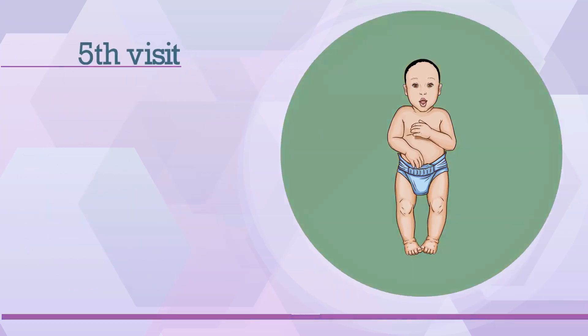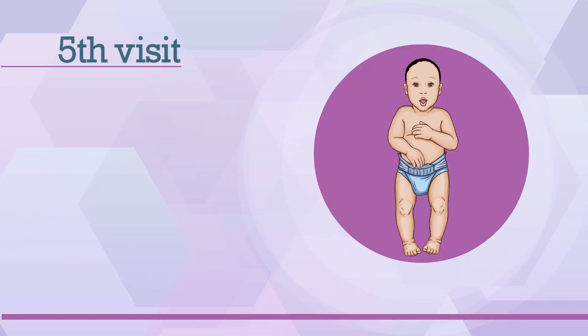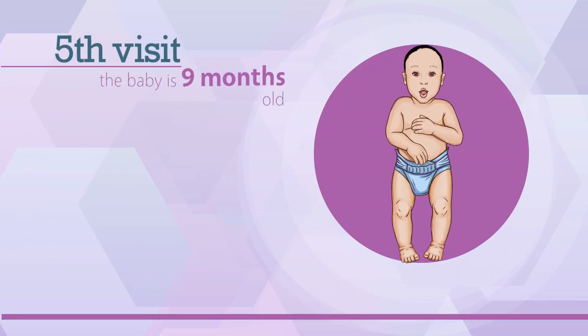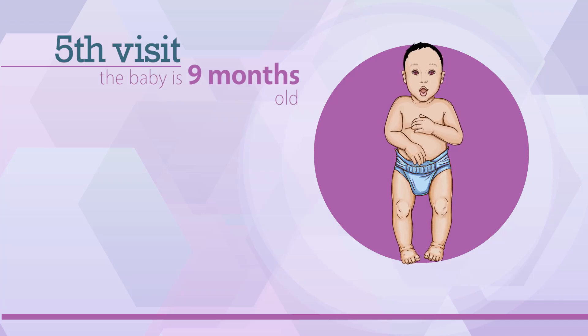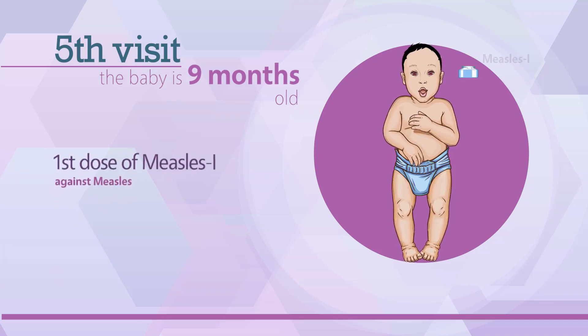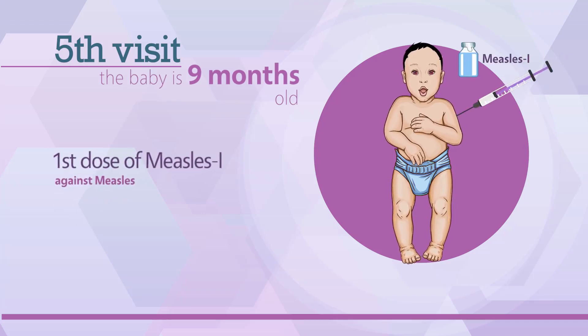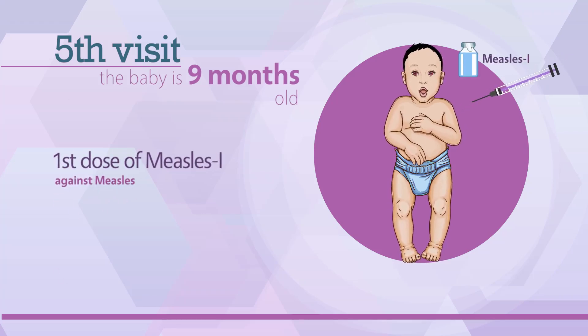The fifth visit is scheduled when the baby is 9 months old. On this visit, the first dose of Measles 1 vaccine is administered subcutaneously in the left arm for protection against measles.